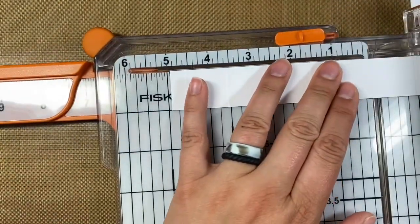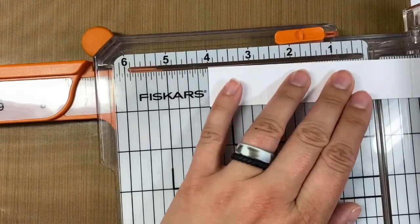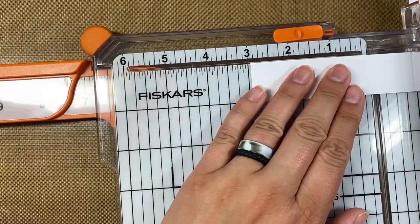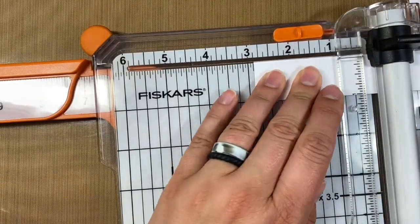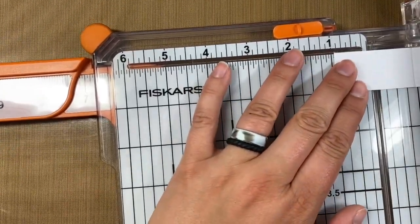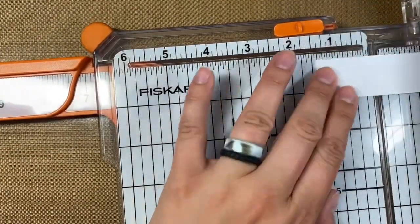So when you're also using your score blade just you want to put some pressure on it because you want to actually get that score line but you don't want to put too much pressure on it where it rips through it. That would not be a good thing. So you just want to give it enough pressure that you're going to get those crisp lines. All right perfect.